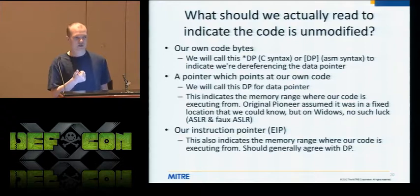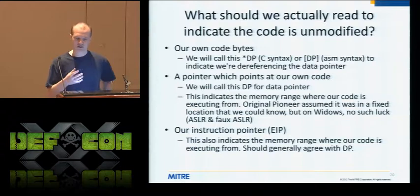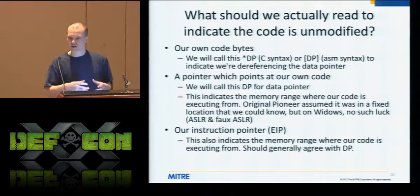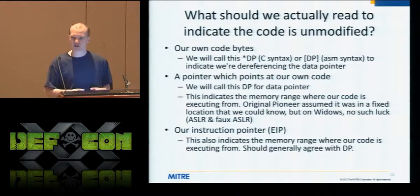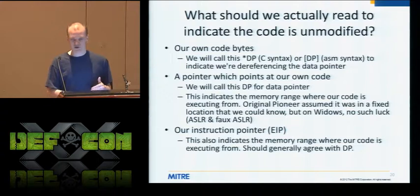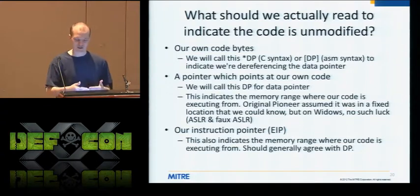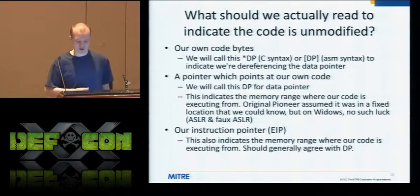You include the data pointer because that says where in memory your code is stored. Then you include the instruction pointer, because that says where in memory your code itself is executing. Those two things should match up and be in the same memory range — otherwise you could potentially have an attack.